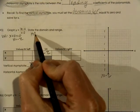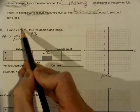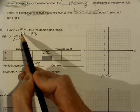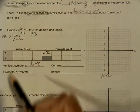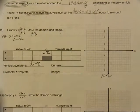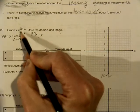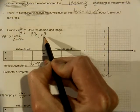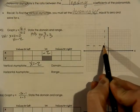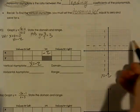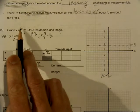Then we are going to look for a horizontal asymptote. We notice the degrees are the same — the degree is one on top and one on the bottom. So we are going to use the leading coefficients. We are going to have y equals three over one, which is three. That is our horizontal asymptote. Because the degrees are the same, we use the leading coefficients.